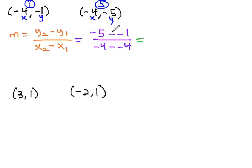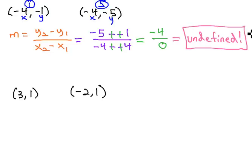We can then combine these together. Subtracting a negative is like adding a positive, so we get negative 4 over 0. However, you may recall that anything divided by 0 is undefined. We can't divide by 0, and so in this case, because we have 0 under the fraction, it is undefined.